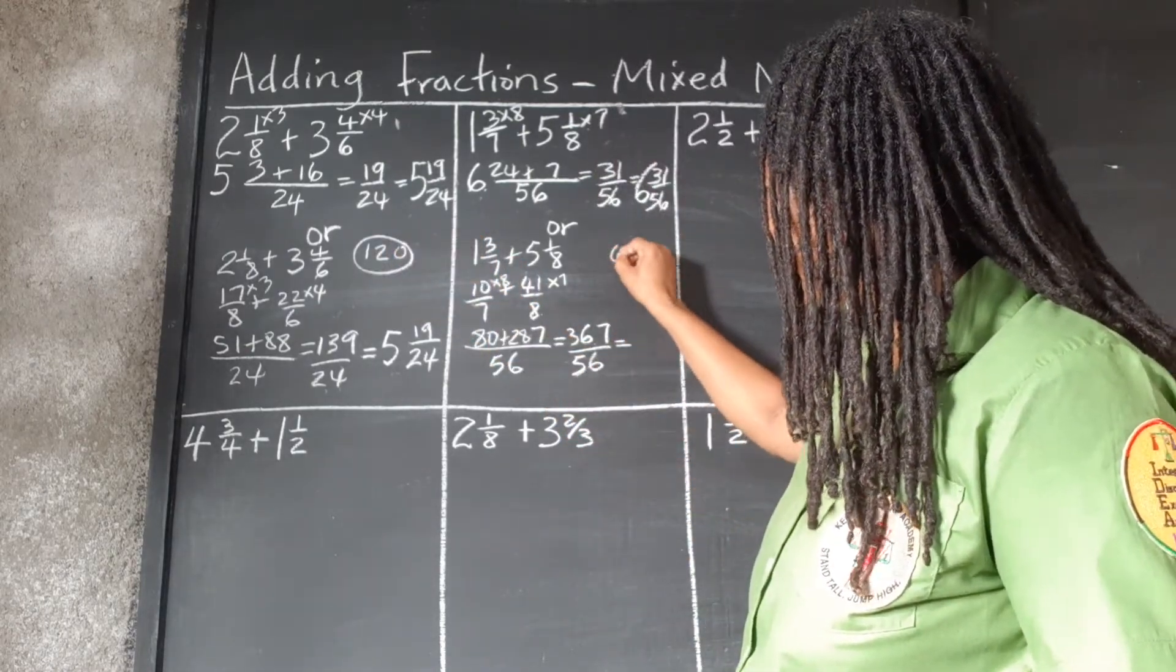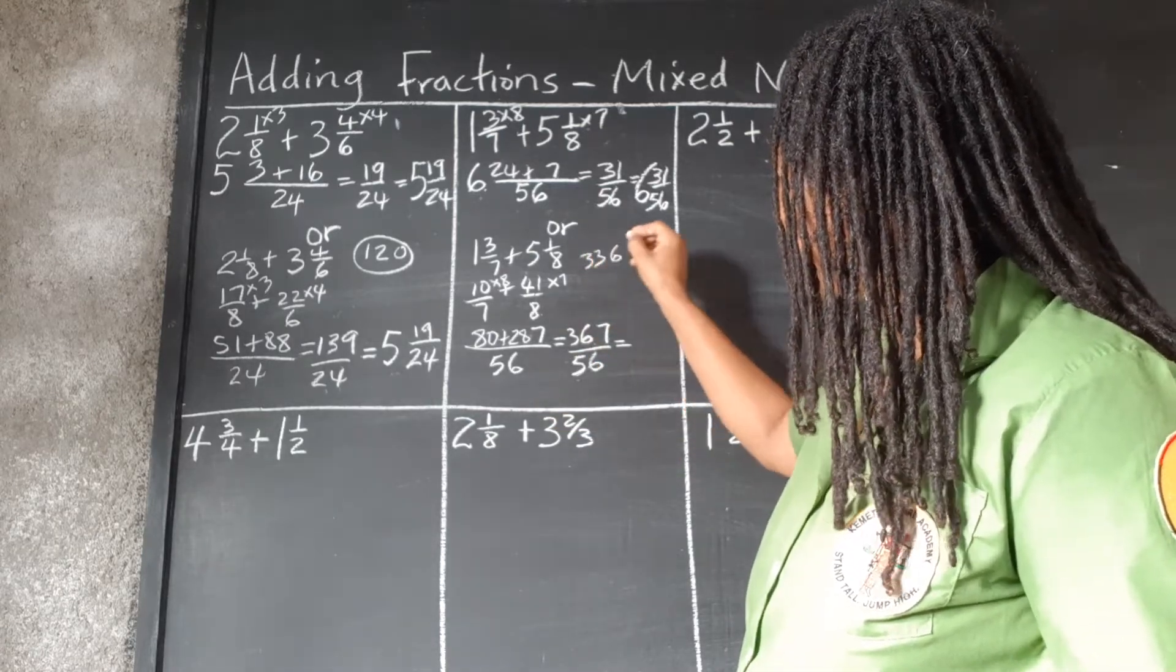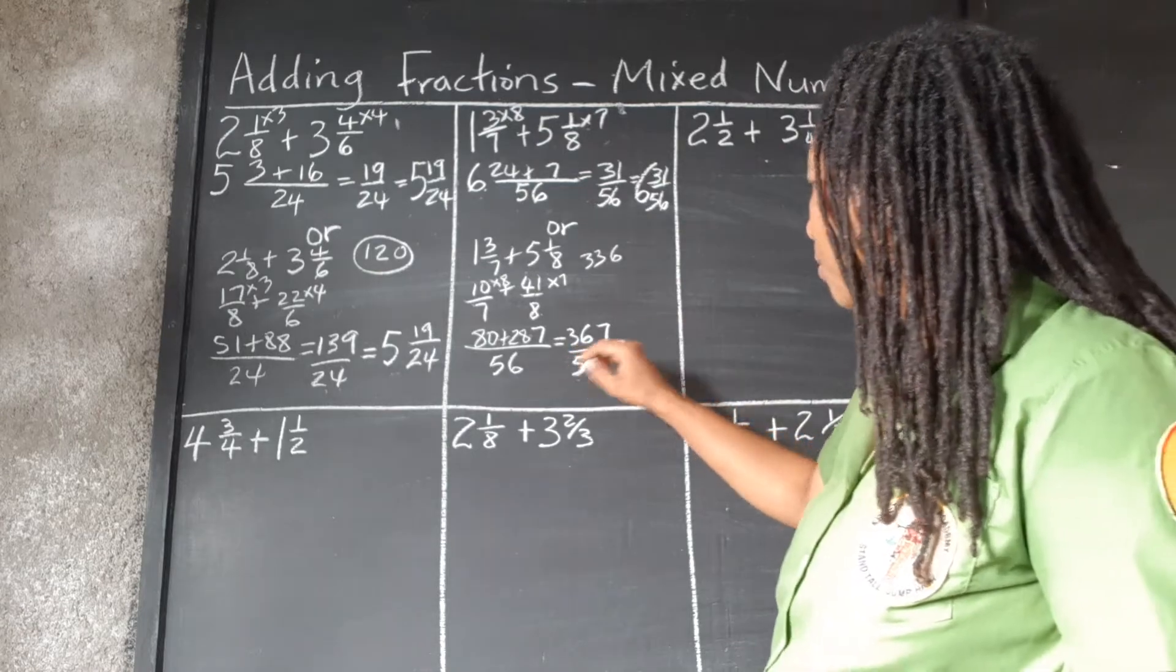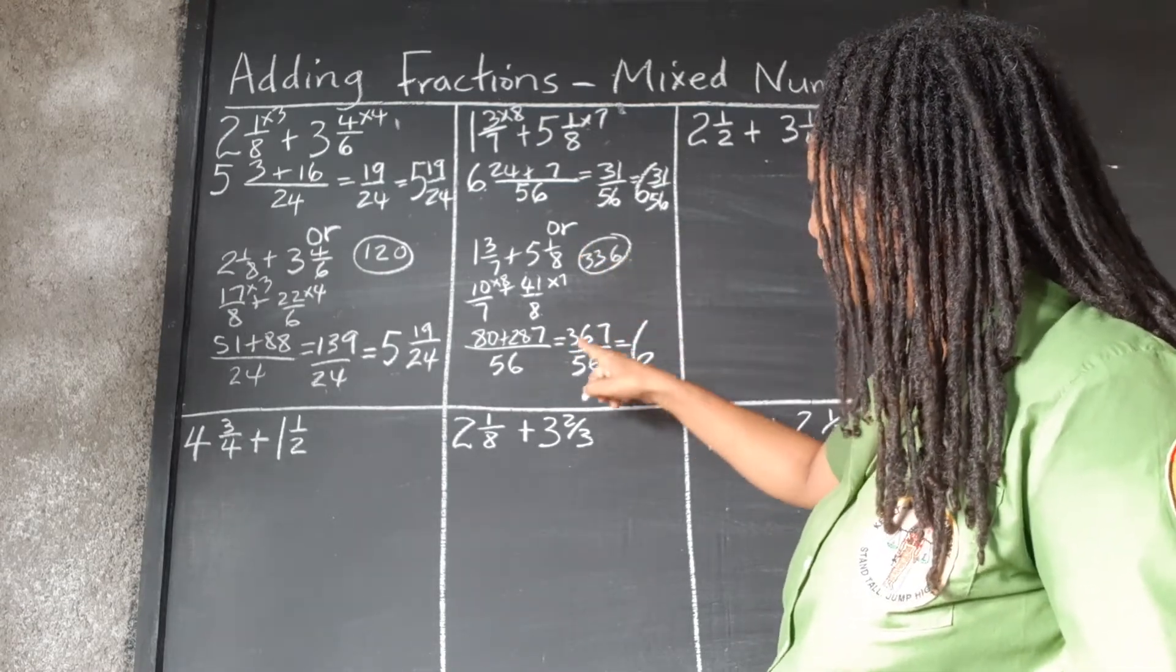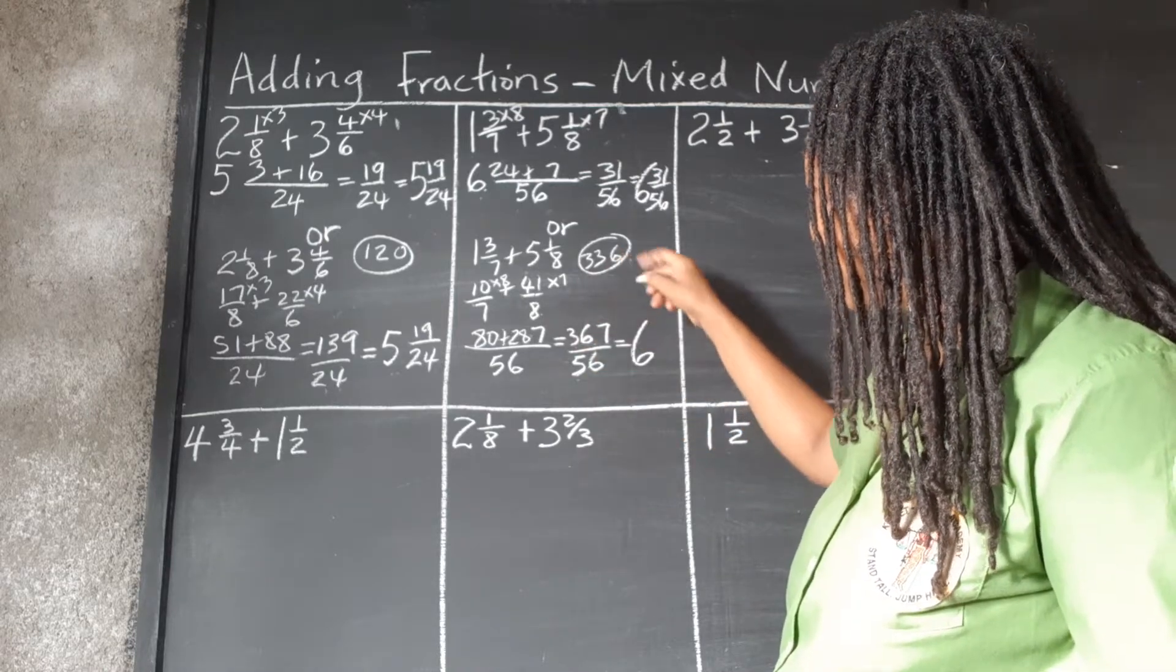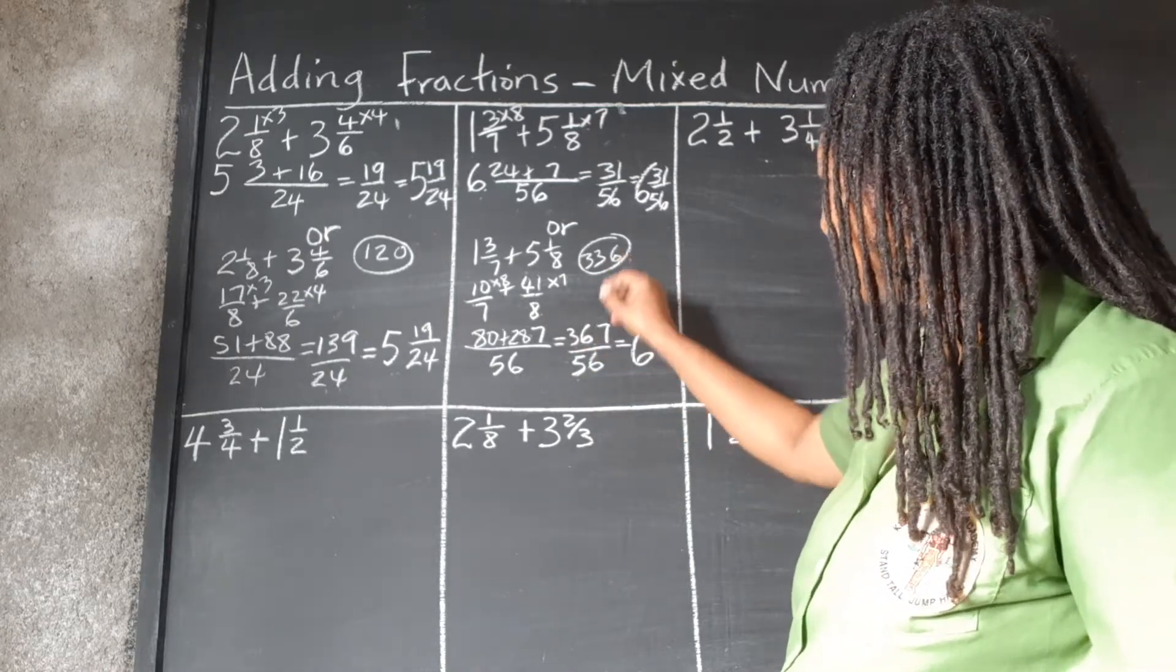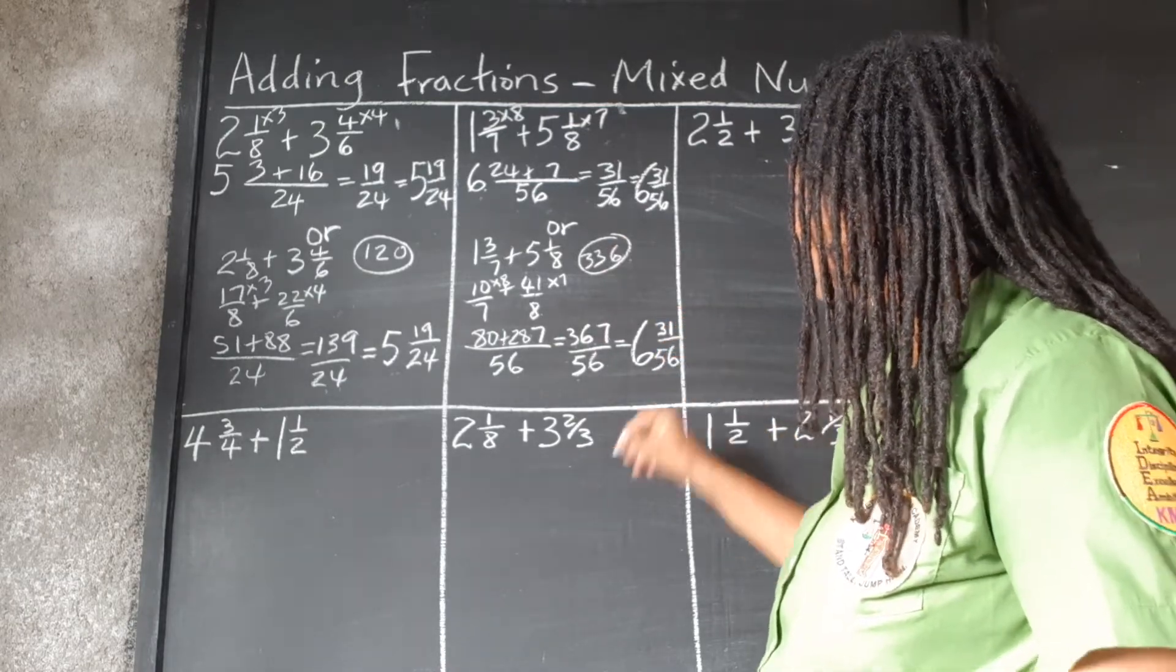So we multiply 56 by 6. 6 times 6 is 36. 6 times 5 is 30, and 3, 33. Okay? So that's 6 times. And we take the 336 from the 367. 7 take away 6 is 1. 6 take away 3, 3.